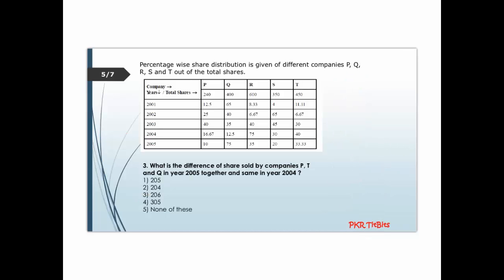Next question: what is the difference in shares sold by companies P, T, and Q in the year 2005 versus the same in 2004? For 2005, company P: 10 percent of 240 is 24.